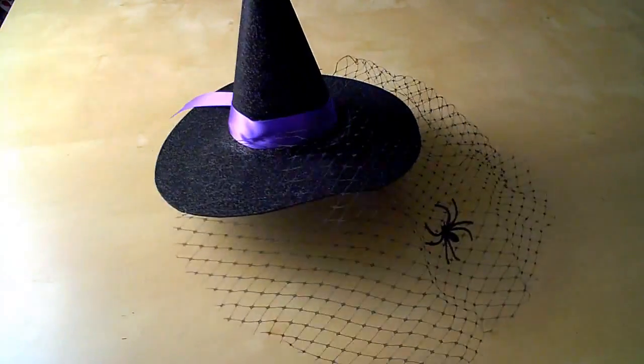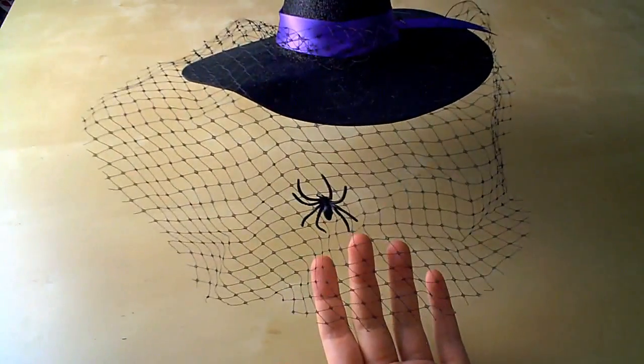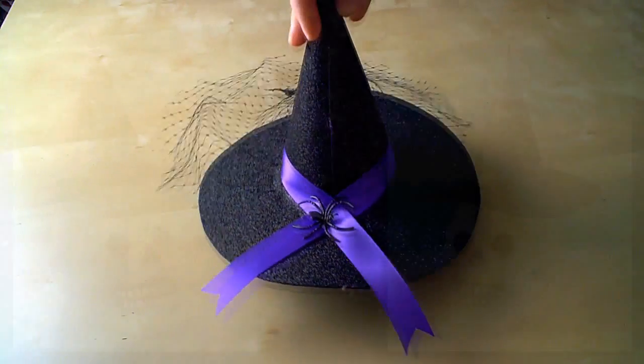I decided to add a little bit of satin ribbon, some spiders, and also a half circle of birdcage veil to mine.